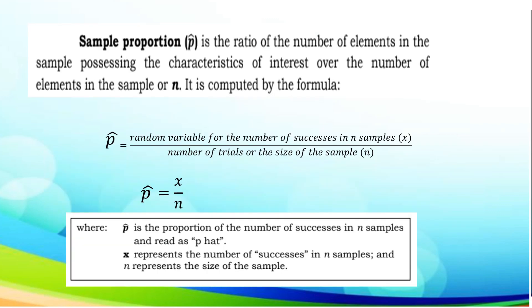Moving on, sample proportion p-hat is the ratio of the number of elements in the sample possessing the characteristic of interest over the number of elements in the sample or n. It is computed by the formula p-hat equals the random variable for the number of successes in n samples (x) over the number of trials or the size of the sample which is n. Symbol: p-hat equals x over n. P-hat is the proportion of the number of successes in n samples, x represents the number of successes in n samples, and n represents the size of the sample.